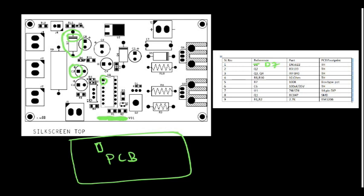See the box type trim pot. See here, the position, how it is mounted. All this information is there in the placement diagram.